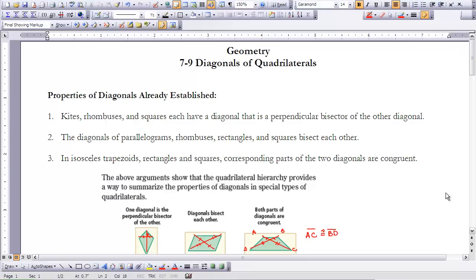We studied the diagonals of our quadrilaterals indirectly. We looked at all of the different special quadrilaterals in our hierarchy in Chapter 6, and then we looked further at parallelograms here in Chapter 7.